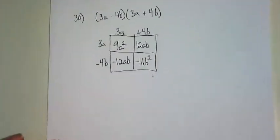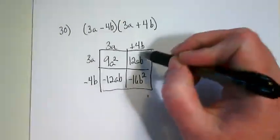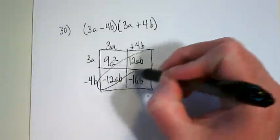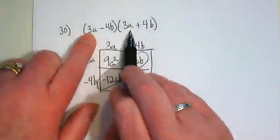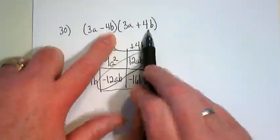Now, because we are working on problems in 7.3, where the objective is about special products, this is a special product, because these two terms are the same, and we have a negative and we have a positive of what is otherwise the same.